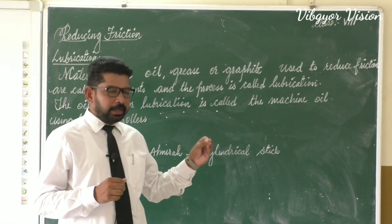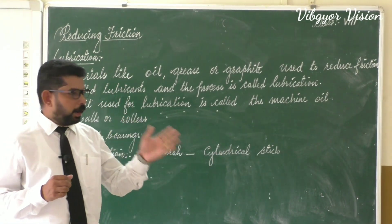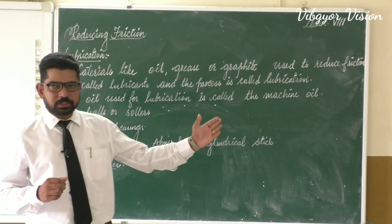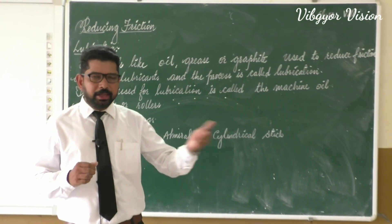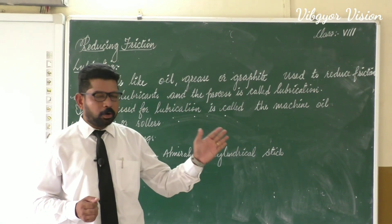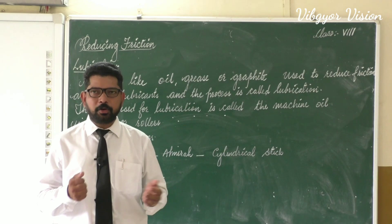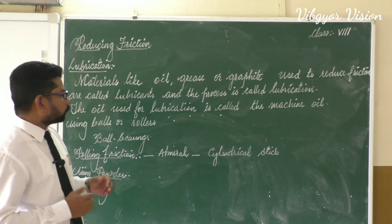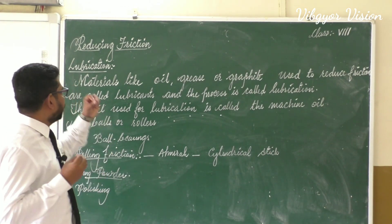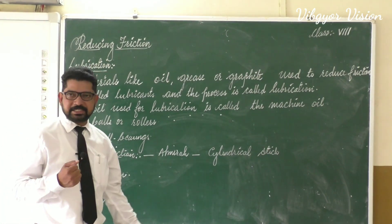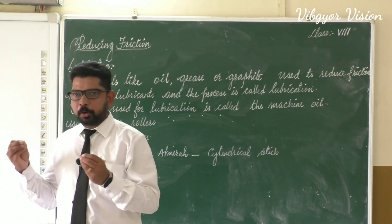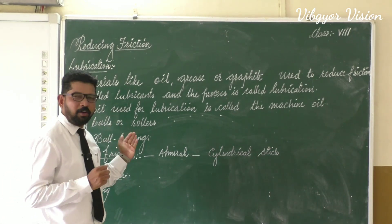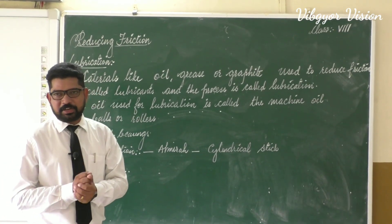Suppose there is a door. If we want to open or close the door, there should be friction. If there is no friction, when you touch the door it will slip and your hands cannot hold it — it won't be possible to open or close it. Also, in our room almost all things are fixed with the help of nails. If there is no friction, it would not be possible to fix a nail on the wall.